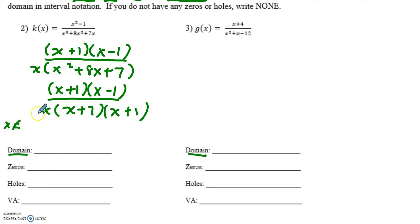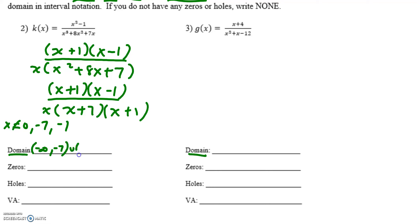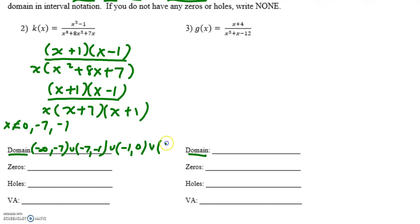Now before I cross anything out, the domain is determined by what cannot exist in the denominator. So x cannot be zero, cannot be negative seven, and cannot be negative one. My domain is therefore: negative infinity to negative seven, union negative seven to negative one, union negative one to zero, union zero to infinity — four parts.